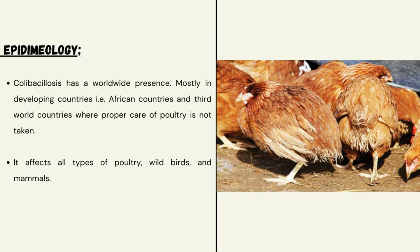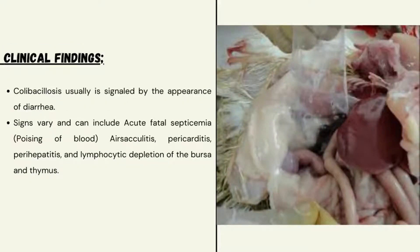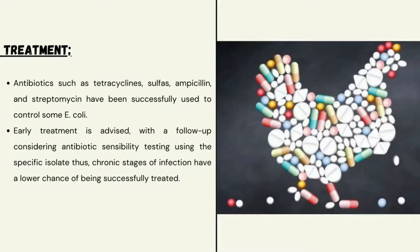Clinical findings in colibacillosis: it is usually signaled by the appearance of diarrhea. Signs vary and can include acute fatal septicemia, pericolitis, pericarditis, perihepatitis, and lymphatic depletion of the bursa and thymus.